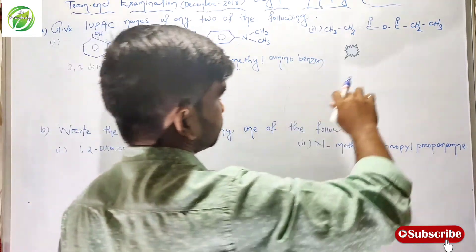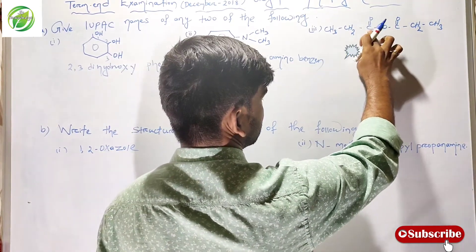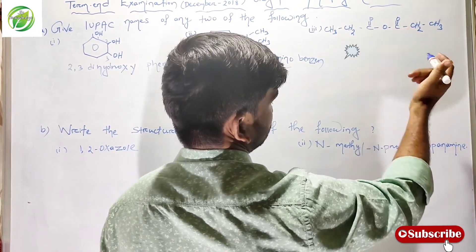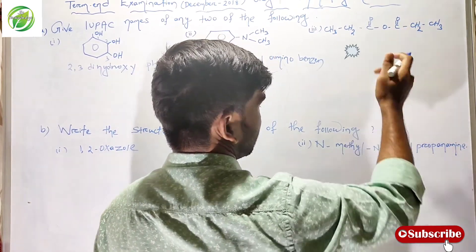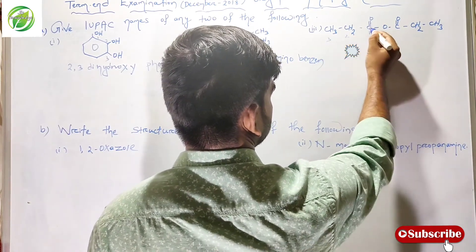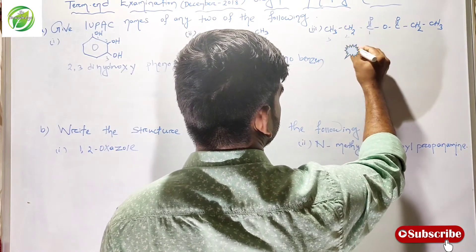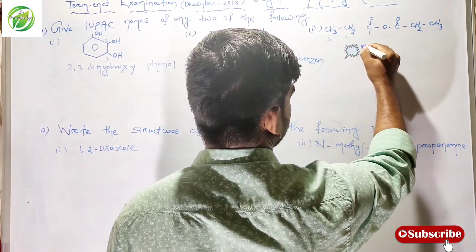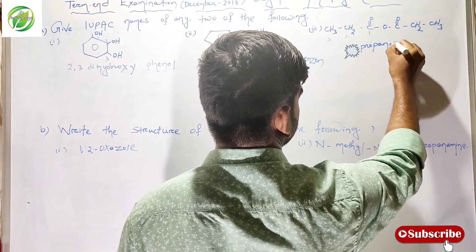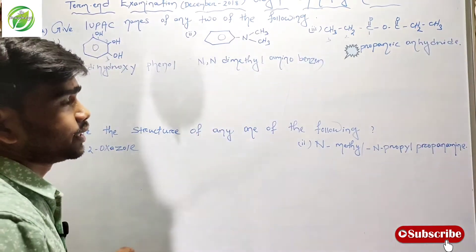The next compound: when C=O is present, this is an anhydride group, with methyl, ethyl, and propyl groups. The resultant name of this compound is propanoic anhydride.